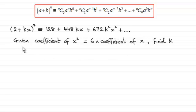For this question, we're given the coefficient of x² is equal to 6 times the coefficient of x, and we've got to find the value of k.